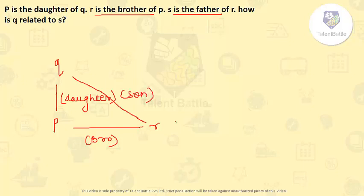S is father of R. So S here is father of R. Here we can say again that S is father of P also. How is Q related to S? S is father so he is going to be husband.